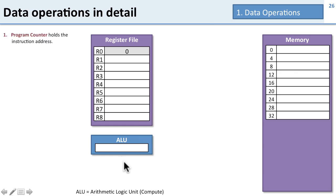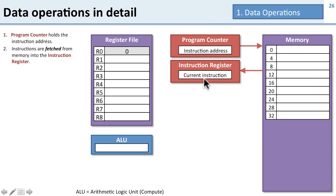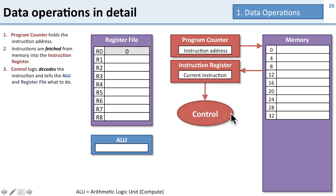The processor works by loading an instruction. The program counter, or PC, holds the instruction address and tells the memory which instruction to look at. Instructions are fetched from memory and stored in an instruction register, which holds the current instruction we're going to work on. The current instruction is then decoded by control logic, whose job is to tell the rest of the processor what to do — it tells the ALU what operation to perform (add or subtract) and tells the register file which data to read and where to write the results back.